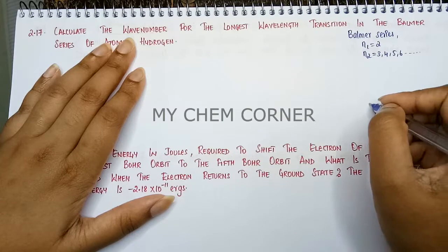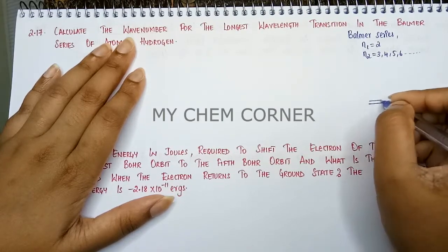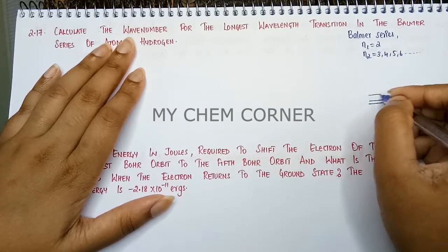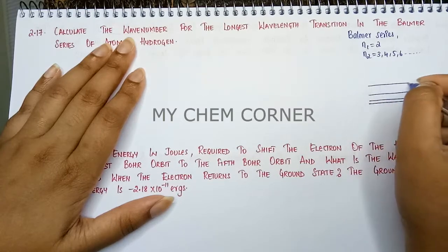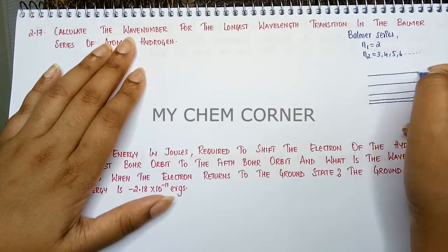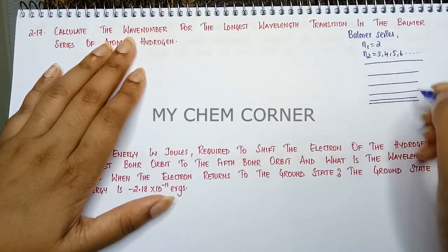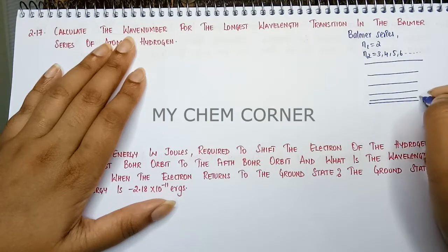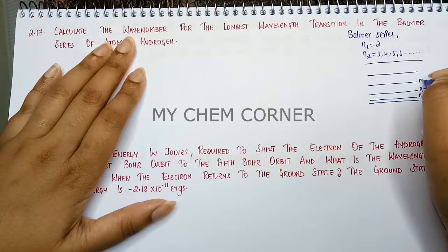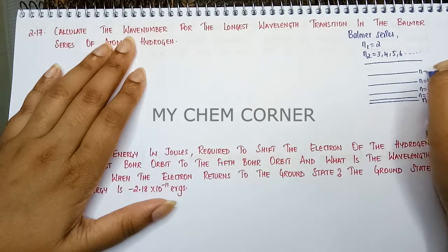So when you draw the lines here I am drawing all of these. So here this is N equals 1, N equals 2, N equals 3, N equals 4, N equals 5 and N equals 6.